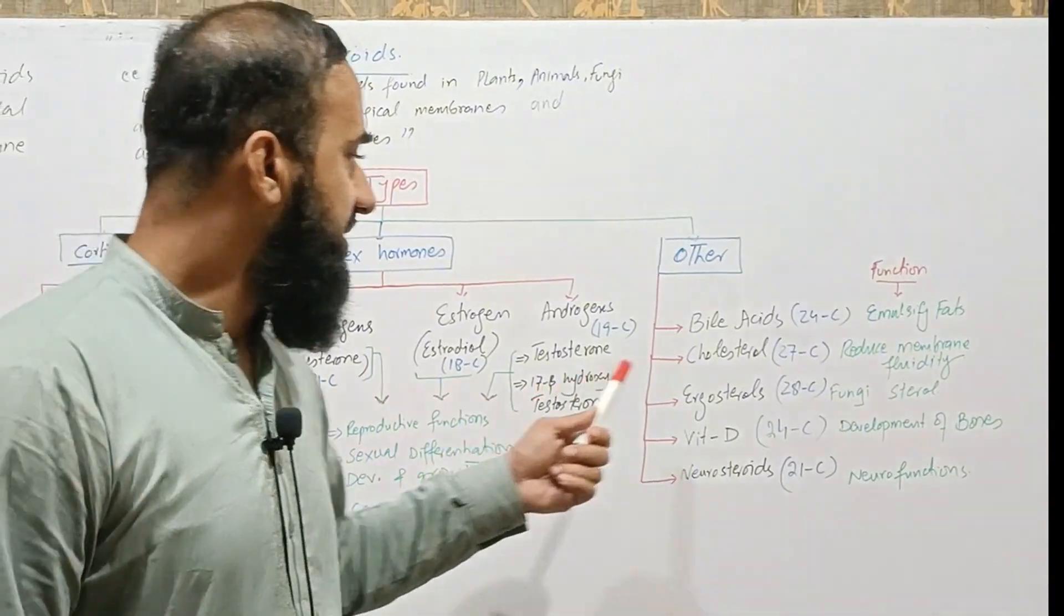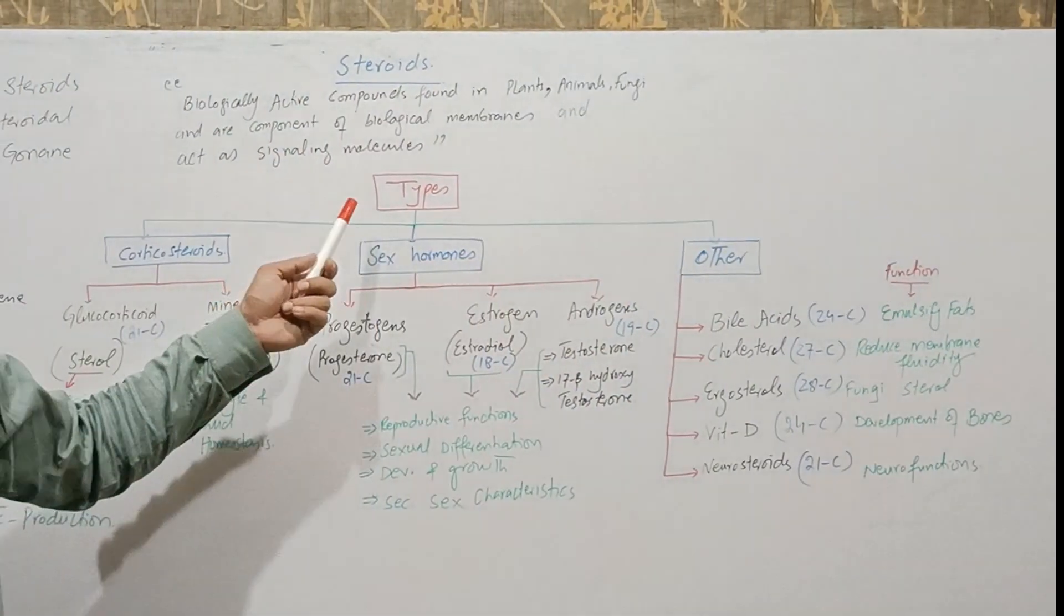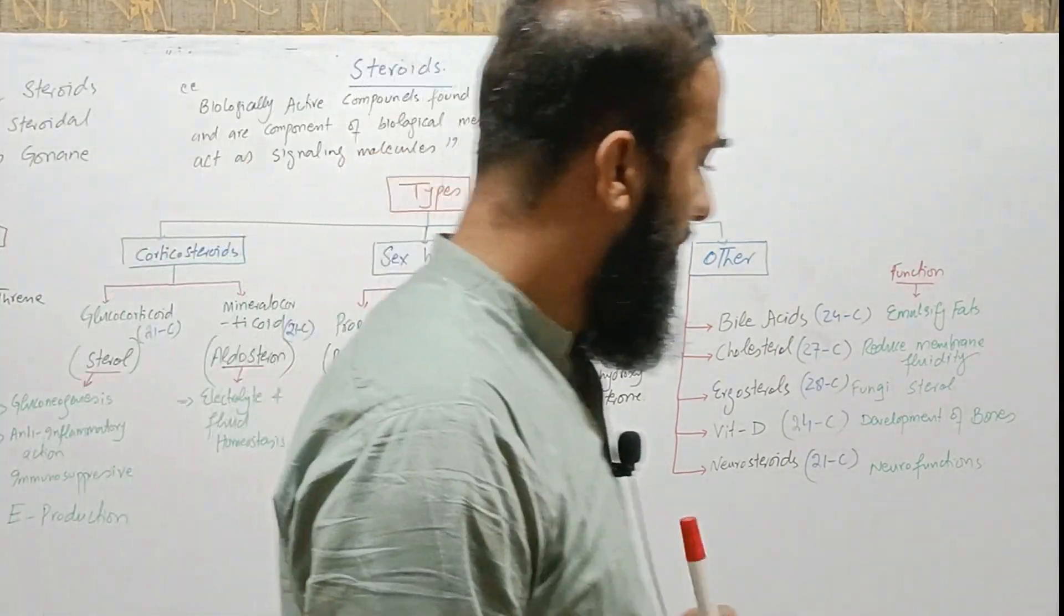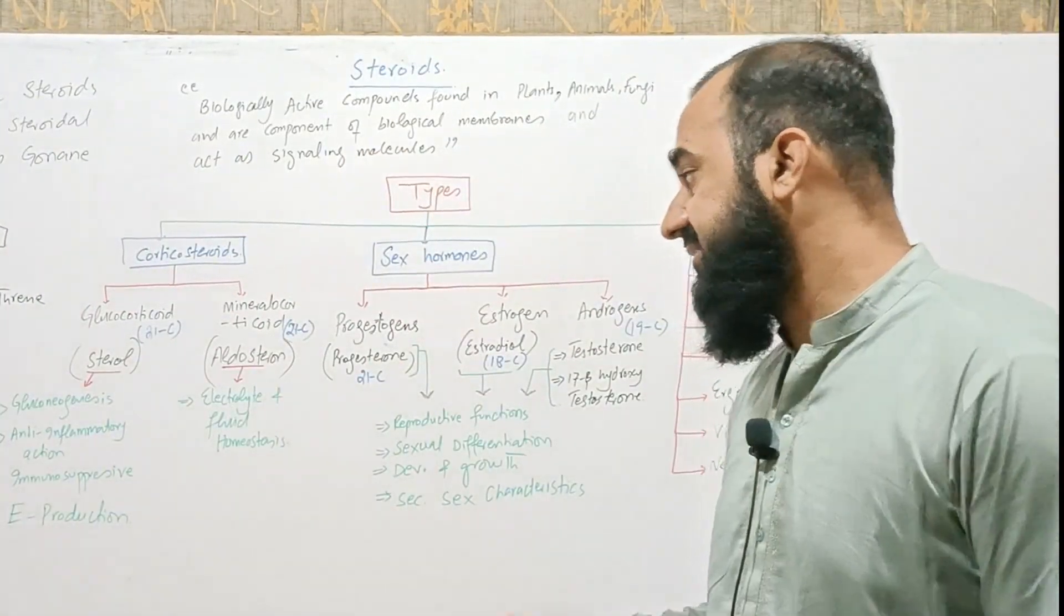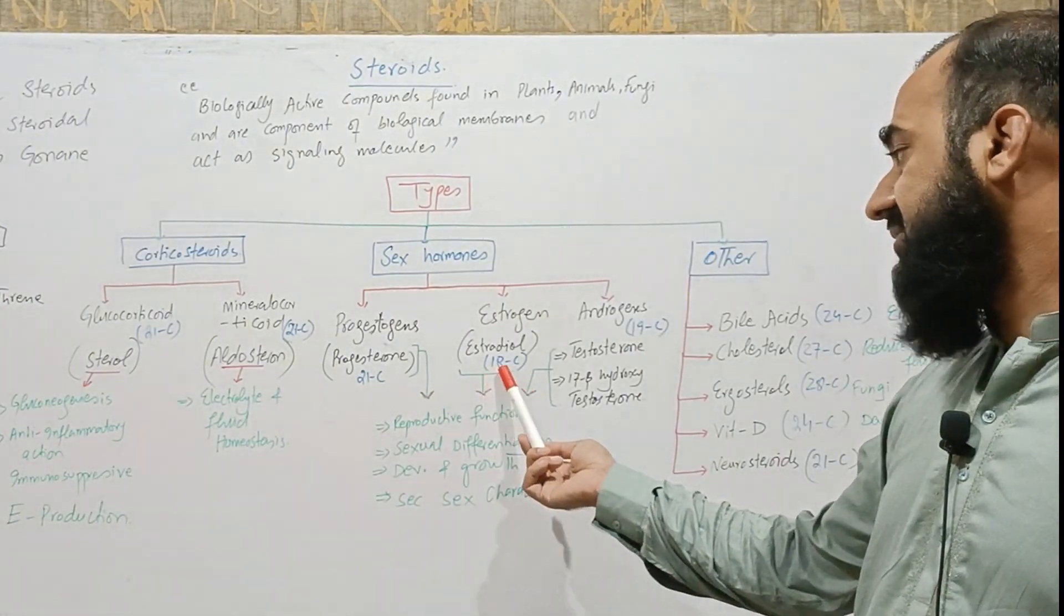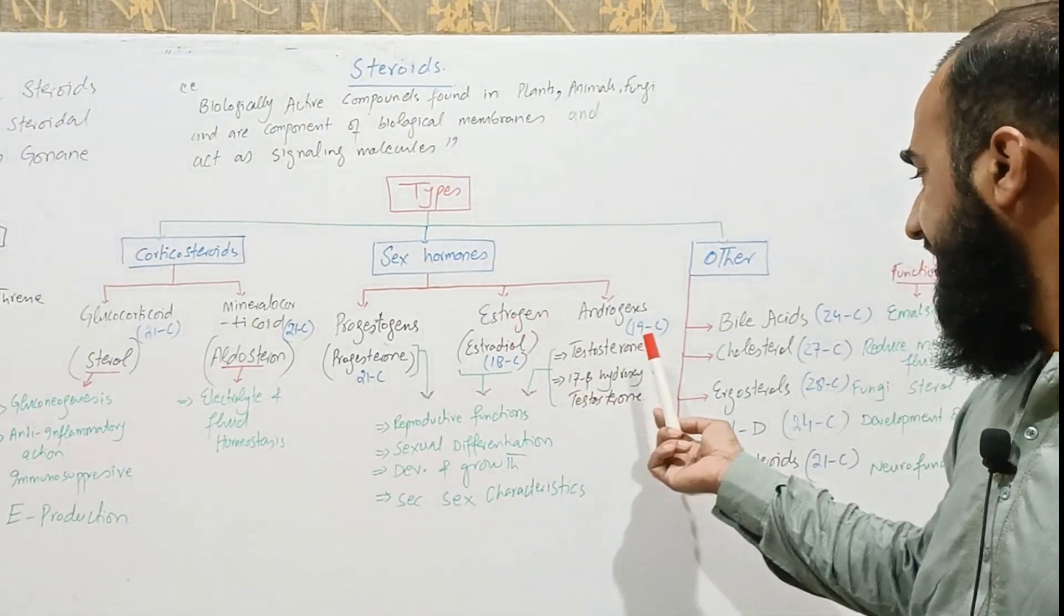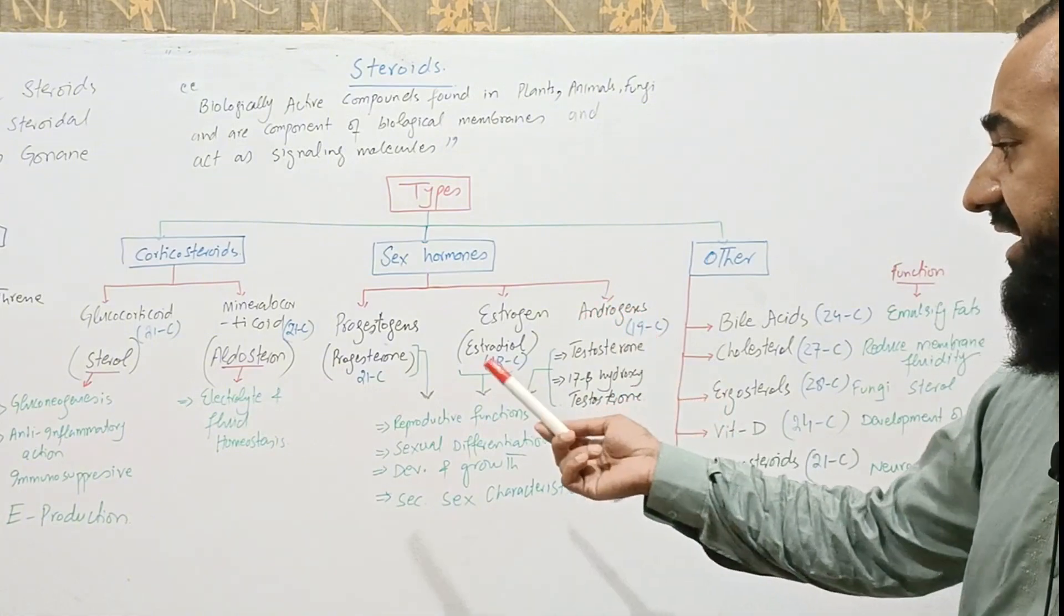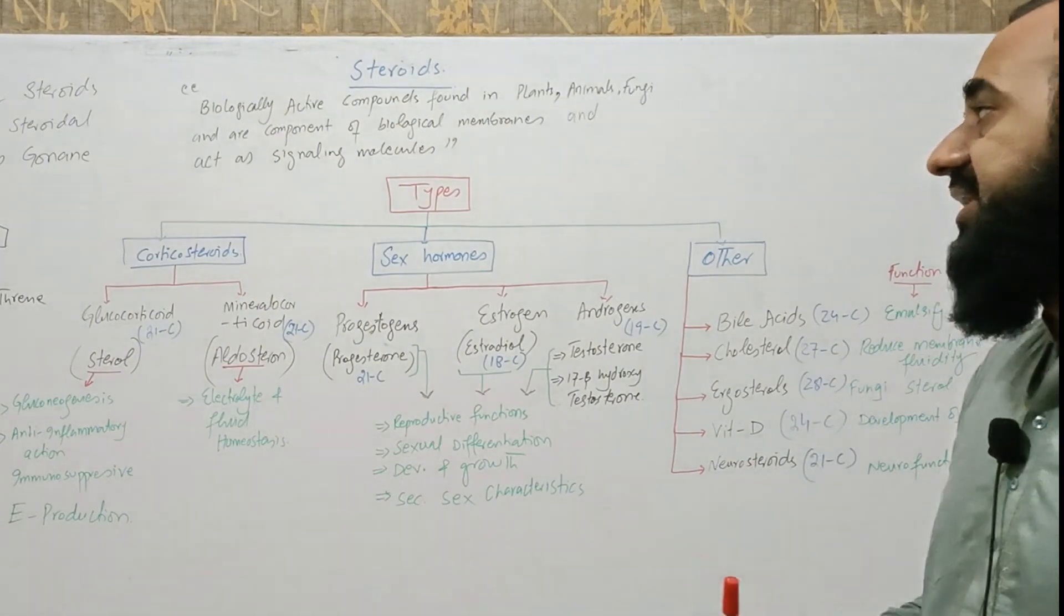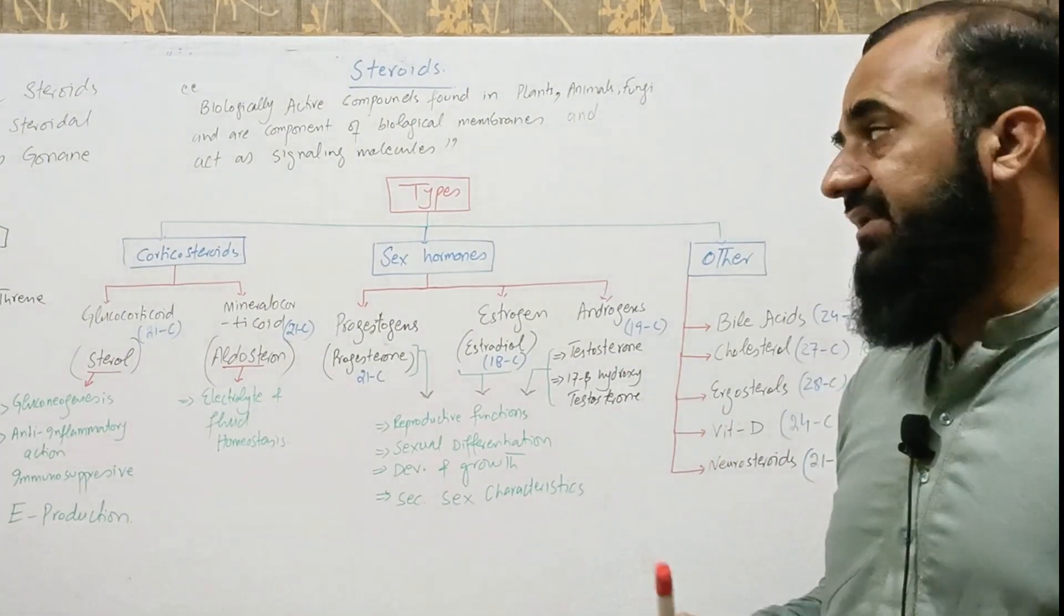We can also classify or divide the steroids on the basis of number of carbons present. So if we see, steroids contain 18 carbons, 19 carbons, 21 carbons, 24, 27, 28. So we can also classify on the basis of number of carbons.